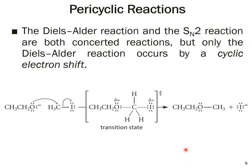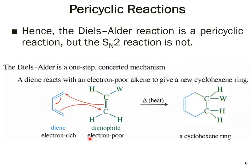If we compare the Diels-Alder reaction and the SN2 reaction, they are both concerted reactions, but only the Diels-Alder reaction occurs by a cyclic electron shift. In the SN2 reaction, you can see the reactants, transition state, and products — it is a single step with no intermediates involved — but there is no cyclic electron shift involved in the SN2 reaction.